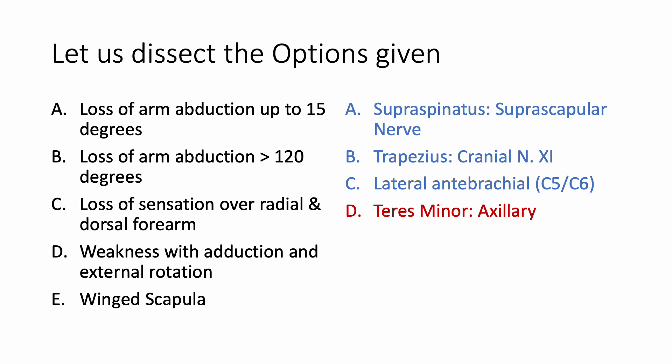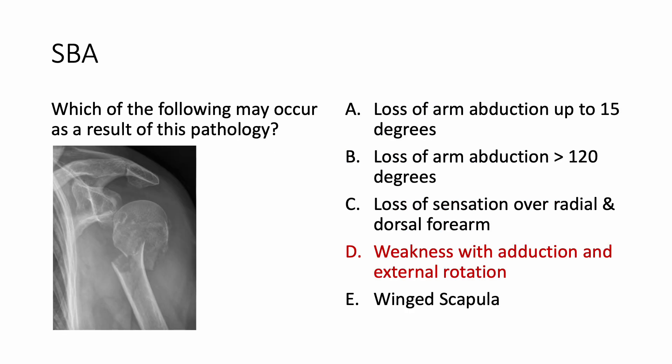Just for completion, let us look at option E: winged scapula. Winged scapula is due to weakness of serratus anterior, and the nerve supply is the nerve to serratus anterior, which is a direct branch of C5, C6, C7 roots of the brachial plexus.